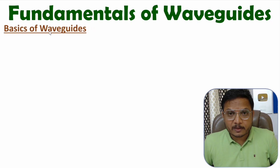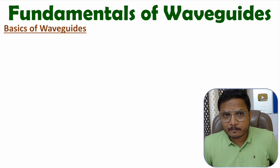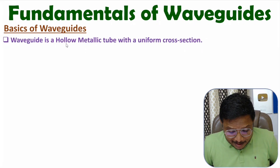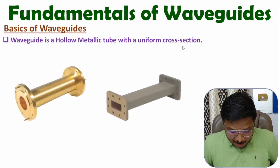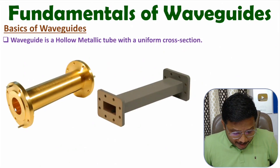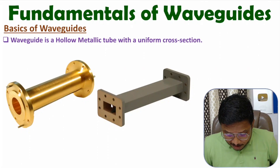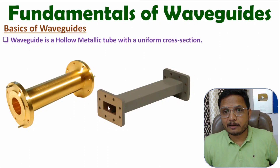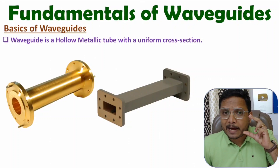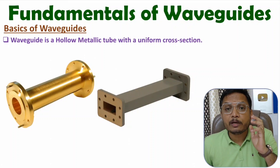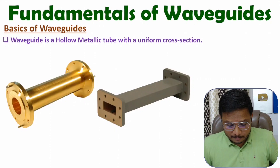First of all, one should know the structure of a waveguide. A waveguide is a hollow metallic tube with a uniform cross-section. If you observe the structure, here we have a circular waveguide and here we have a rectangular waveguide — both are hollow metallic tubes with uniform cross-sections. So a waveguide is essentially just a pipe with a uniform cross-section.